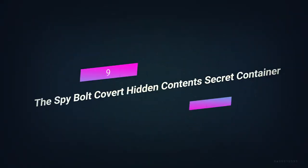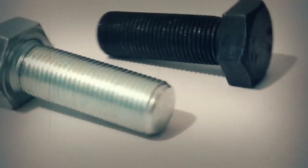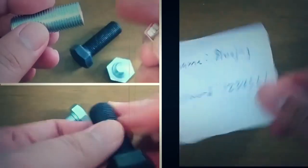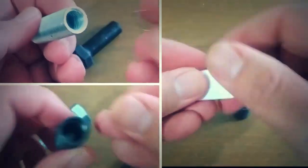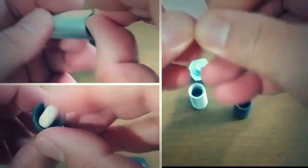Number 9, The Spy Bolt Covert Hidden Content Secret Container. This hollow bolt can hide a space that's the same size as 2.8 cubic inches. If you hide your money, bills, or other small items in this bolt while you're undercover, you won't have to worry about anyone taking them.